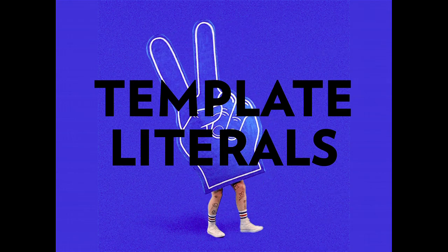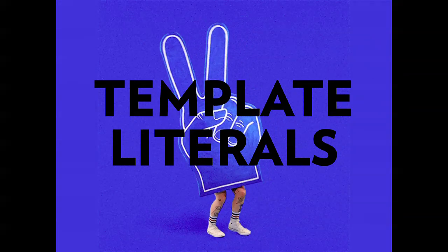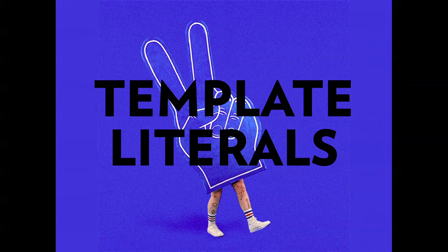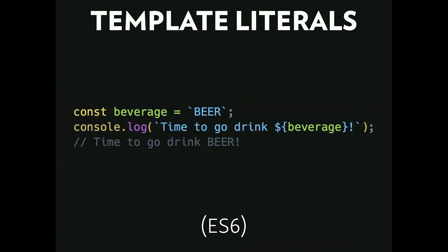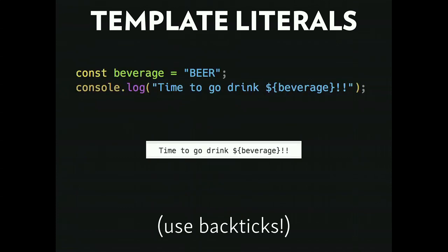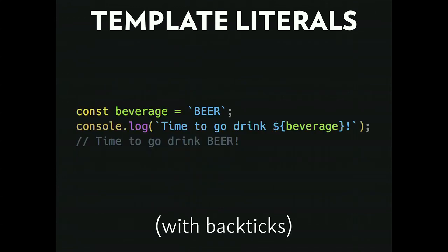The next section is template literals. Template literals are something super small but super awesome. In ES5, you'd do this gross concatenation: quote plus space plus variable plus space quote — it's just such a pain to write. In ES6, we have embedded expressions: dollar sign curly brackets, boom, done. You'll notice I'm using backticks. If we use actual quotes, it's a literal string — we get the variable name, not the value. So definitely use backticks. In all my JavaScript code now I use backticks exclusively — I'm pretty sure I'll use a template literal somewhere, so why not keep code clean and consistent?